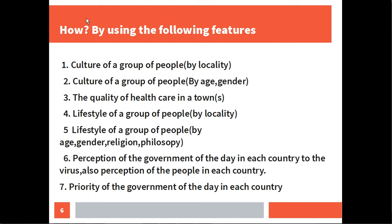Number three: consider the quality of healthcare in a town. Quality of healthcare includes the quality of health personnel, the quality of the hospitals, availability of electricity, the quality of equipment, and several other yardsticks used to rate good healthcare in an environment.